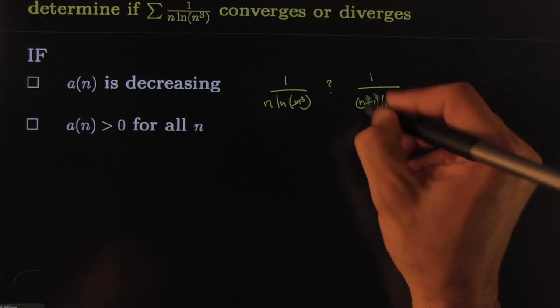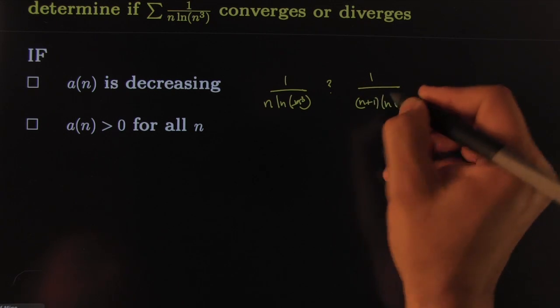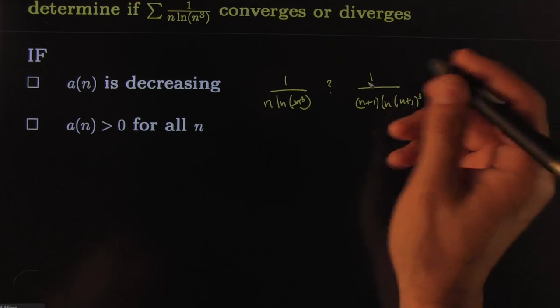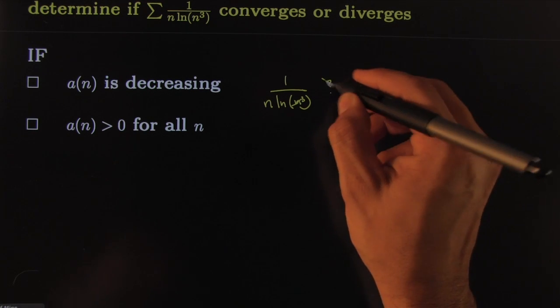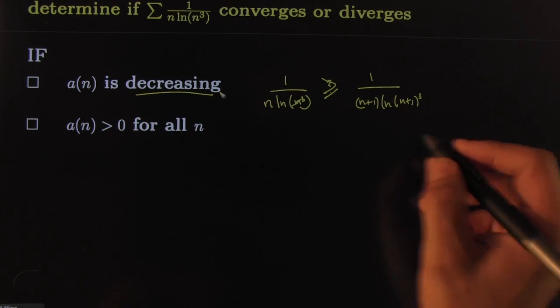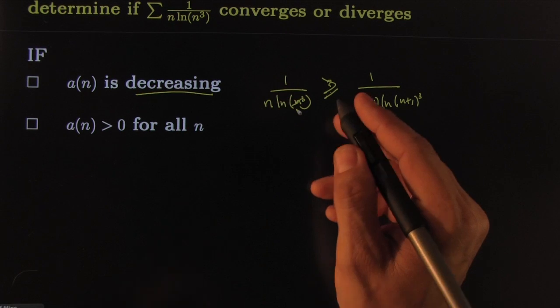When this denominator is bigger, that means the quotient is getting smaller and smaller. So therefore this one is bigger than that one. That tells you that it's decreasing. Or we talked about a fancier way of showing decreasing: you just check the first derivative. If the first derivative is negative, you're done.